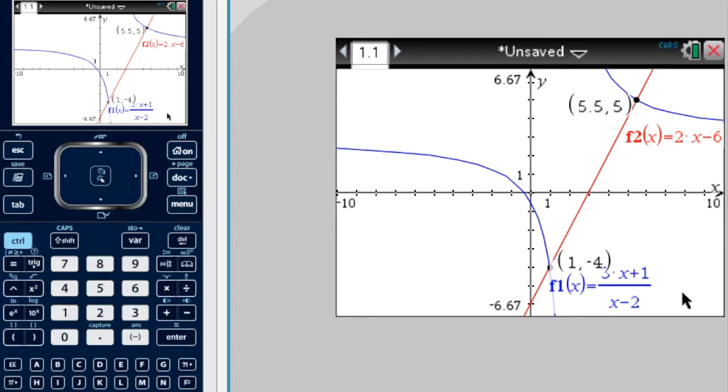Now, to answer the question, we need to know when 3x plus 1 over x minus 2 is less than or equal to 2x minus 6. So in other words, when is the blue function, this one, less than, I mean lower than, the red function? So that happens.